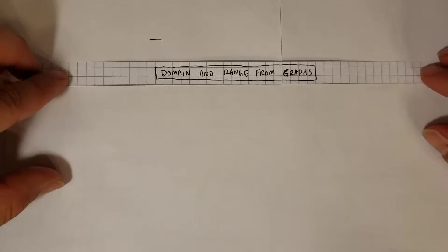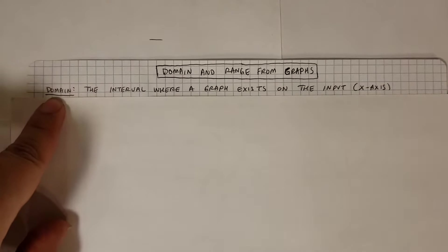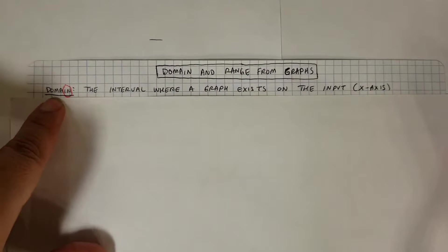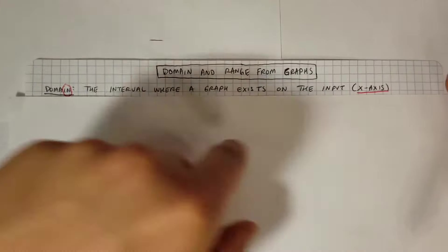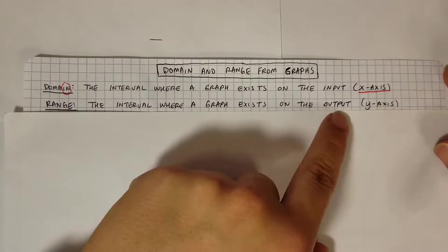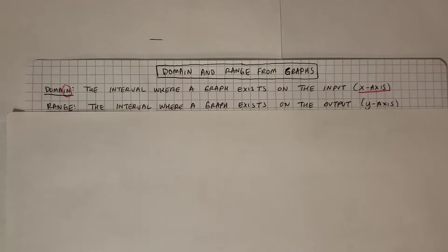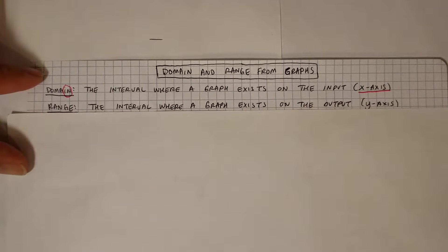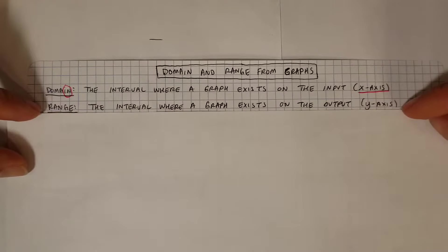Domain and range from graphs. To find the domain and range: domain is the input, which is x — the interval where the graph exists on the x-axis. The range is the interval where the graph exists on the output, the y-axis. So all we're doing is figuring out where does this graph exist on the x-axis and on the y-axis — what is the beginning and end on each axis.